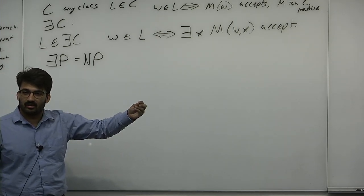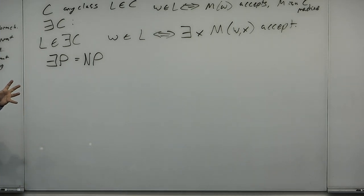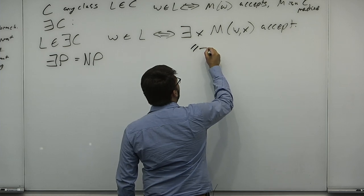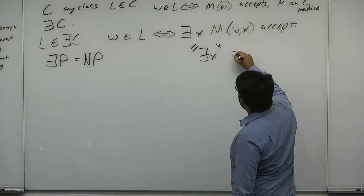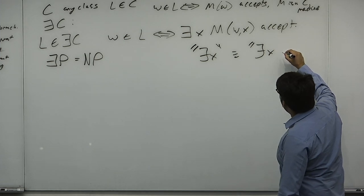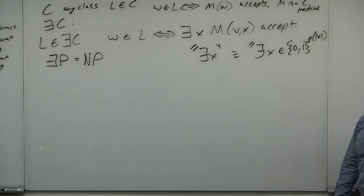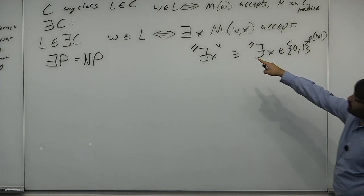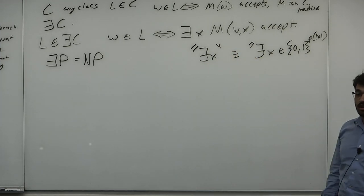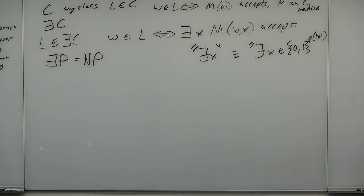Exist-P can take on the witness as the satisfying assignment and simply check that it satisfies the formula. Whenever I write 'there exists some X,' I really mean there exists some X of polynomial length — we're only quantifying over polynomial-size strings. It's important: the verifier definition also requires this because a polynomial-time verifier cannot read an exponentially long witness. Some problems do have exponentially long witnesses, but those end up being NP-hard but not NP-complete for reasons like this.